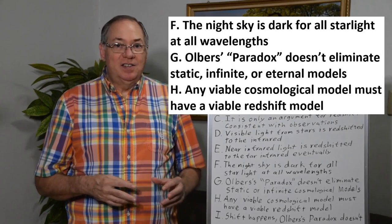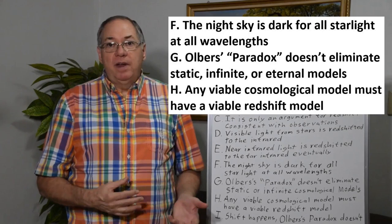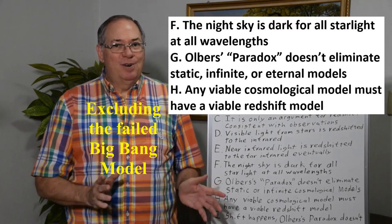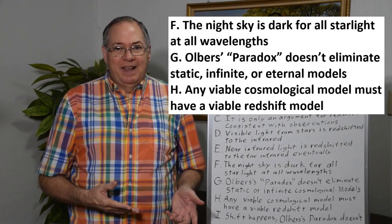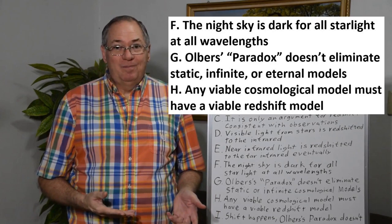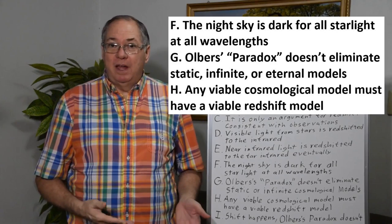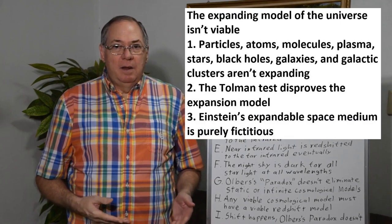What that ultimately means is the night sky is dark for every frequency and every wavelength of starlight. The only frequency where it's not dark is the cosmic microwave background, which for some reason isn't redshifted — but that's the topic for a whole other video. Since redshift is a real thing and exists, Olber's Paradox isn't a paradox anymore. Shift happens, Olber's Paradox isn't real, and any viable cosmological model must include a viable model of redshift. The redshift model based on an expanding universe isn't viable.